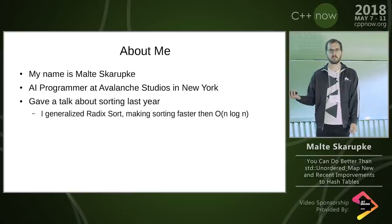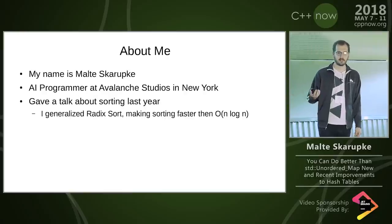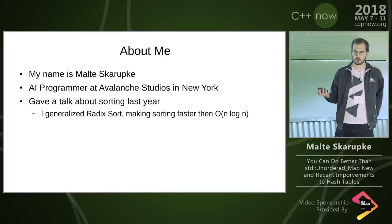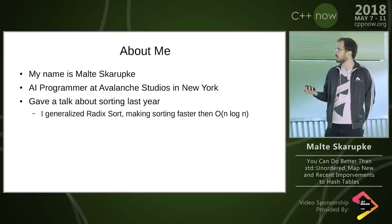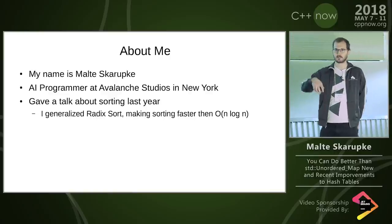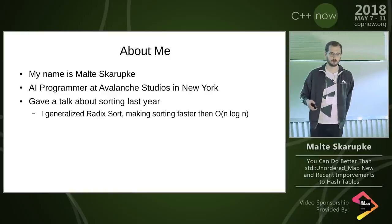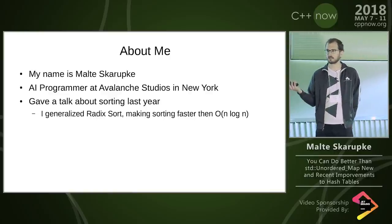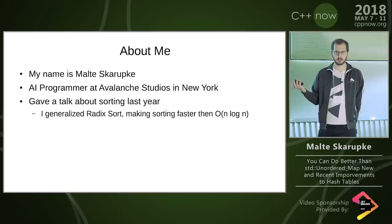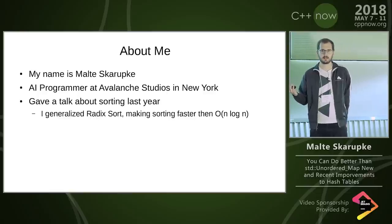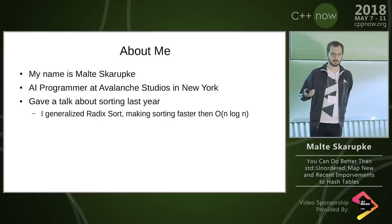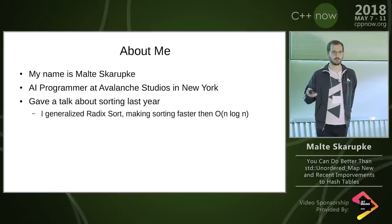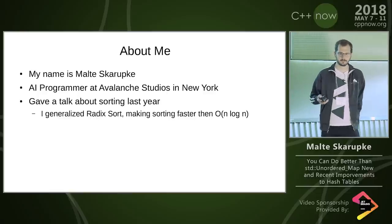My name is Maltes Garopke. I'm an AI programmer at Avalanche Studios in New York. I was also here last year in the same room and gave a talk about radix sort where I generalized it, which makes sorting faster than n log n. I still feel like more people should use that, which is why I'd like to mention it again.